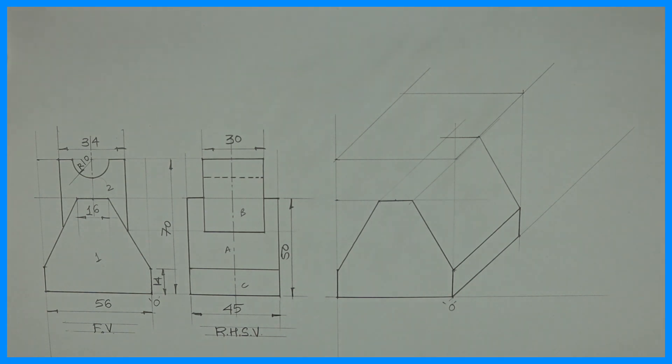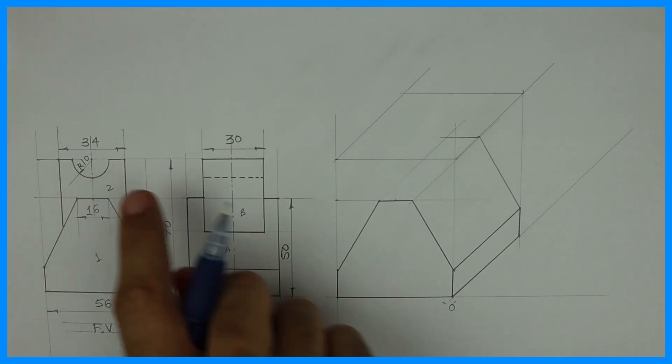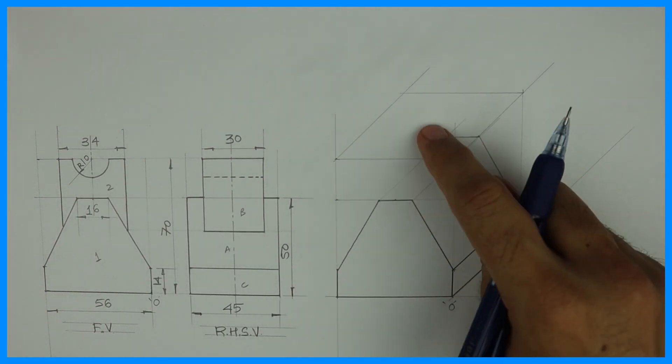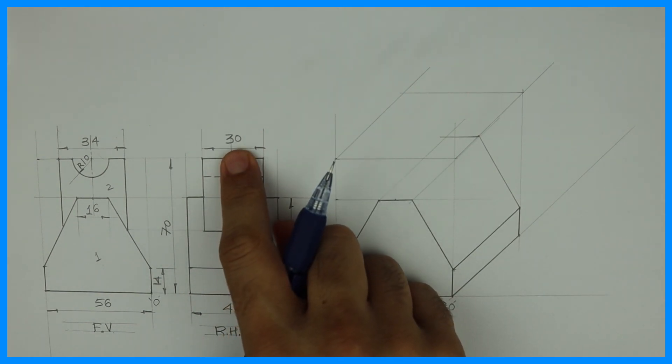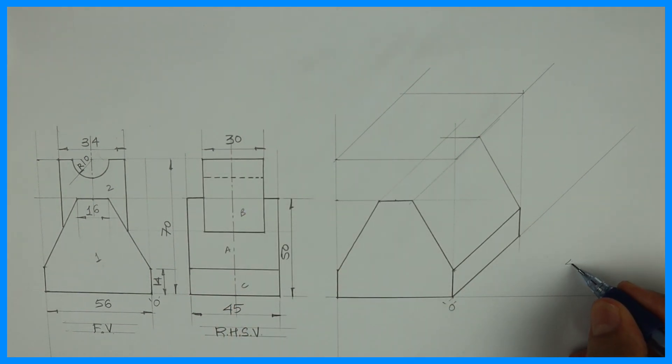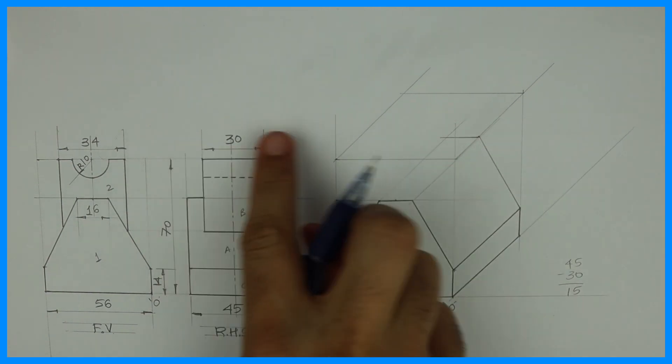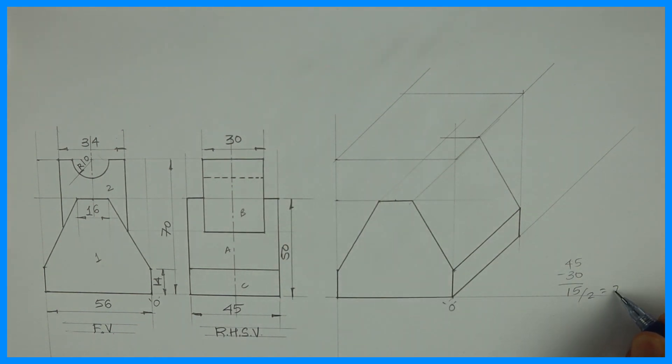See this, so first part is done. Now for the second part, if you see part two is behind, how much it is behind? 45 minus 30, so it would be 15. It is on both the sides so it will be divided by 2. See this, 15 divided by 2 would be 7.5.